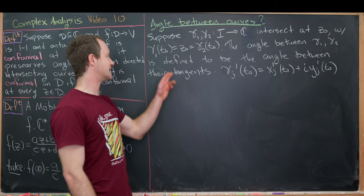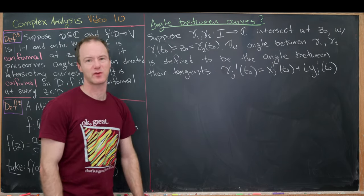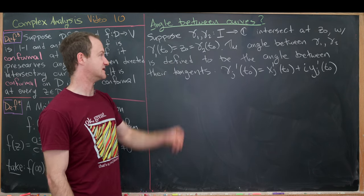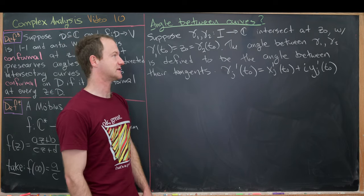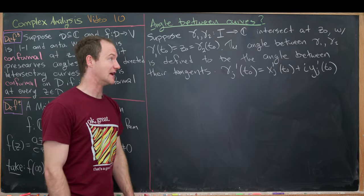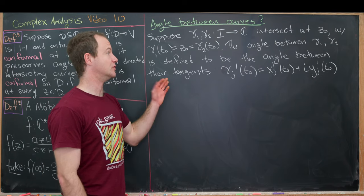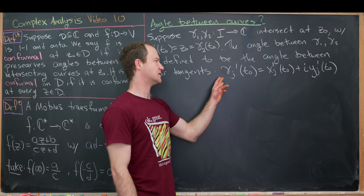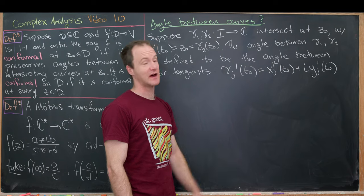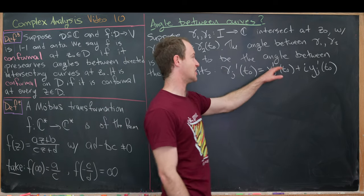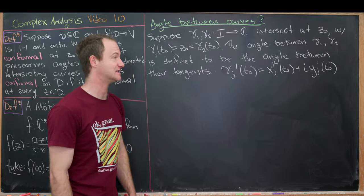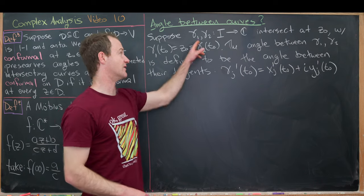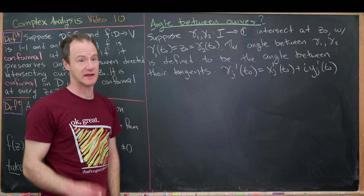We'll reparametrize these so that they intersect at the same value of the parameter, just for ease of use. So we have γ₁(t₀) = z₀ = γ₂(t₀). We define the angle between γ₁ and γ₂ at z₀ to be the angle between their tangents at z₀ — that'll be γⱼ'(t₀) = xⱼ'(t₀) + i·yⱼ'(t₀), assuming the real and imaginary decomposition of our curves.